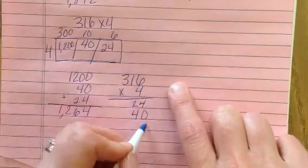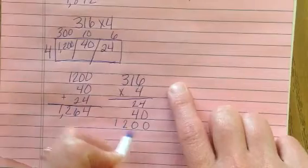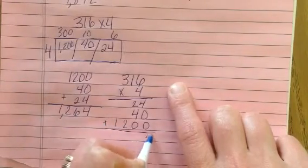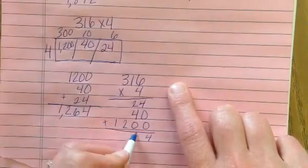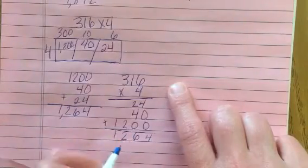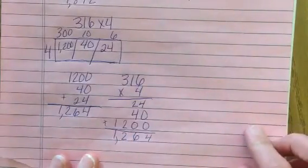4 times 300 is 1,200. Go ahead and we add. 1,264.